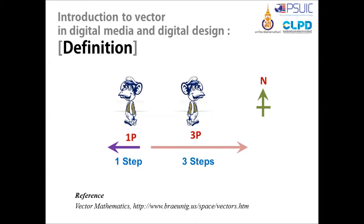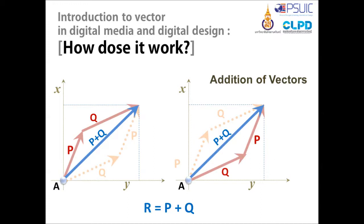Two vectors are the same if they have the same magnitude and direction. This means that if we take a vector and translate it into a new position without rotating it, then the vector we obtain at the end of this process is the same vector we had in the beginning.